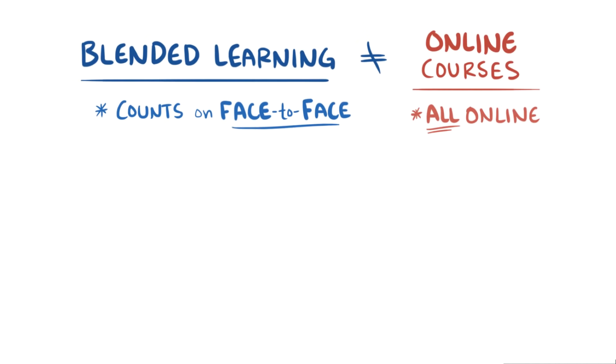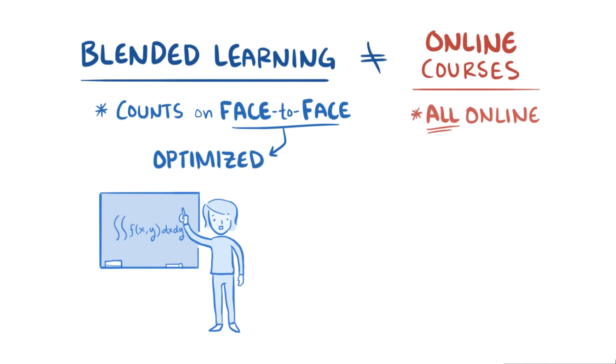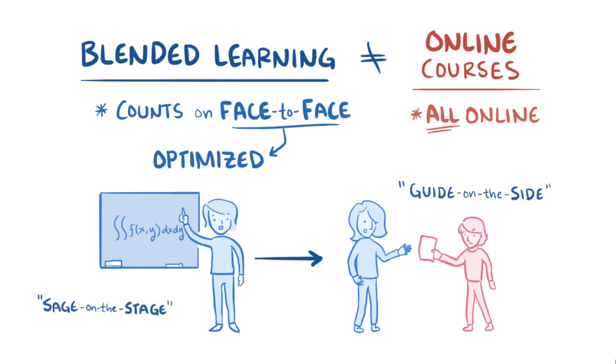Instead of getting rid of these interactions, blended learning structures are intended to optimize them, moving the teacher from a passive sage on the stage, who delivers didactic lectures to a large audience, to a more active role as a guide on the side, who interacts one-on-one with students to help guide them in ways that might be impractical or impossible with a traditional teaching model.